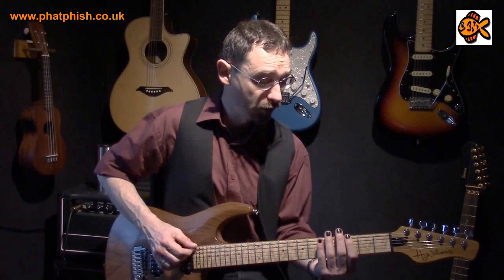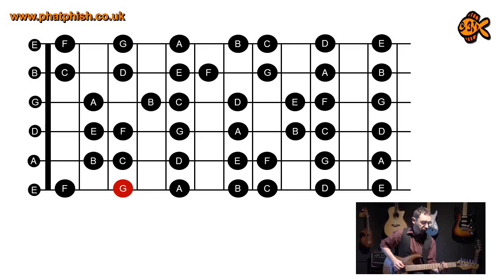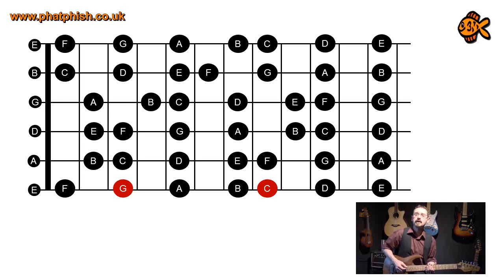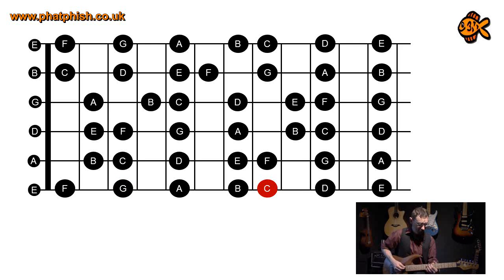So from G we go one, two, three, four, five — and if you have a look at your fingerboard, five semitones up from G gives us a C.